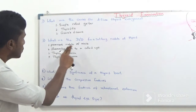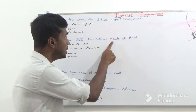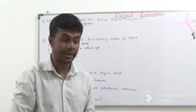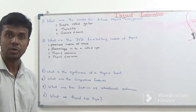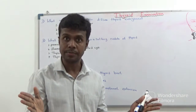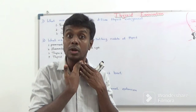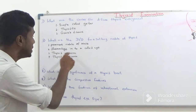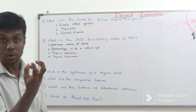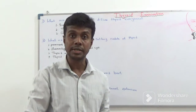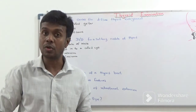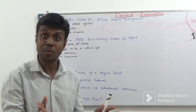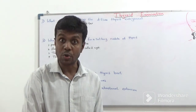Question number two: what are the differential diagnoses for a solitary nodule of the thyroid? It can be due to a prominent nodule of a multinodular goitre where other nodules are very small and difficult to palpate. Other causes include haemorrhage into a colloid cyst, thyroid adenoma, and thyroid carcinoma.